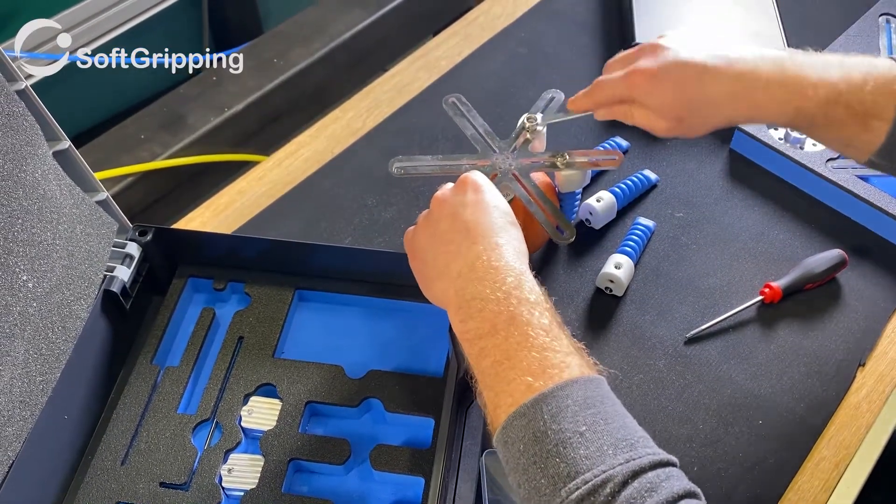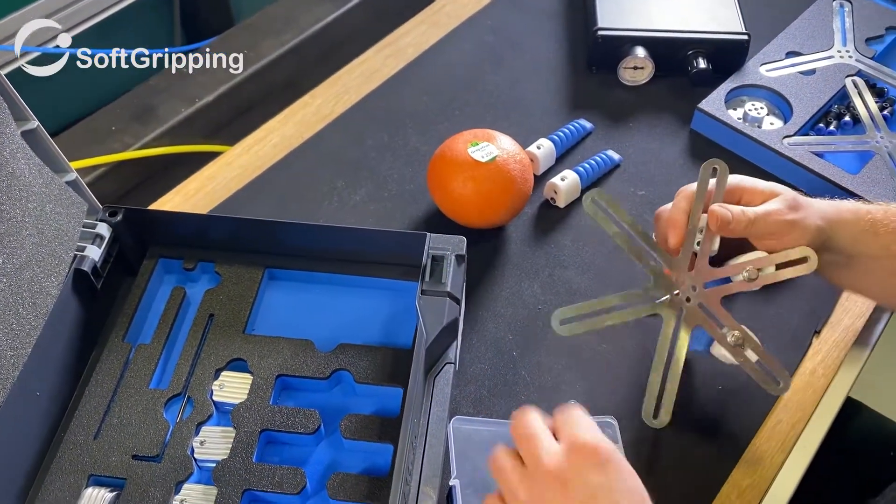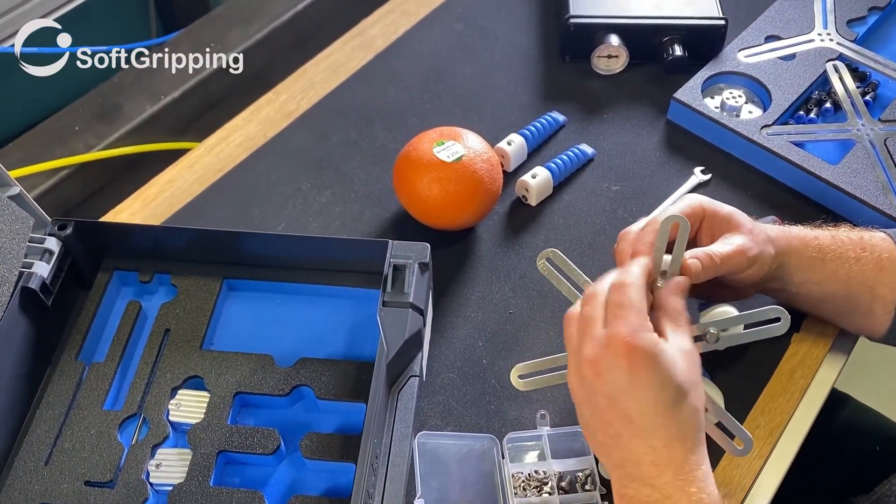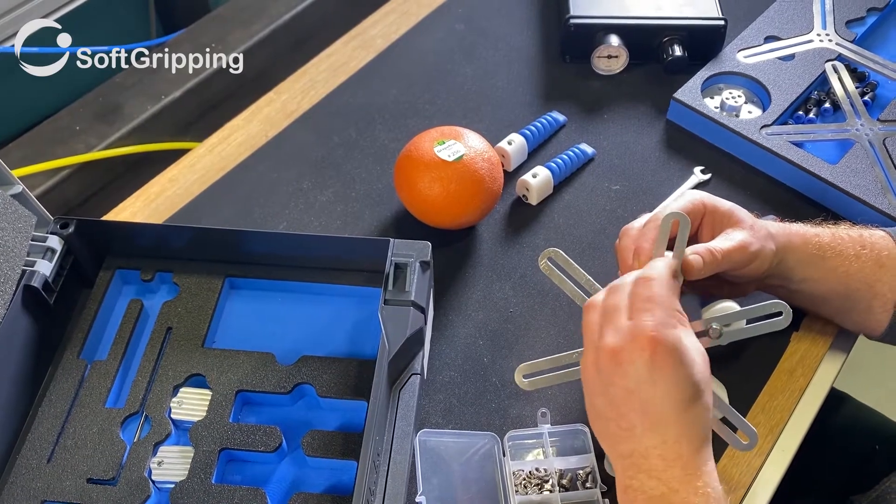The kit also includes the pneumatic connections, some hoses and tools you need for the assembly, and of course all the tubings and adapters you need for a quick start.